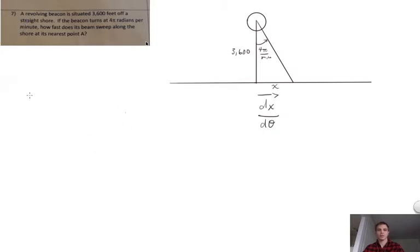Okay, so we need to make a relationship, and if there's a right triangle here, the distance away from this closest point where the beam would be, so if this is where the beam currently is, the distance away from this closest point on shore, I labeled that x.